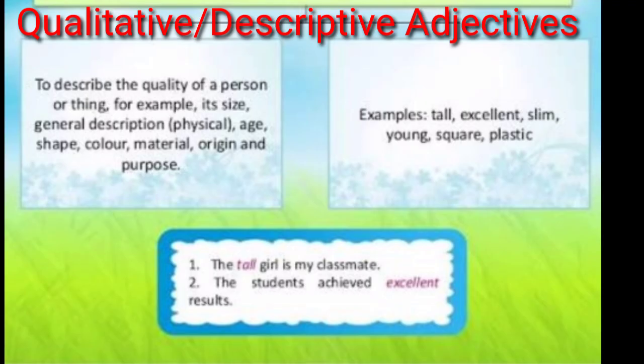The first type of adjective is the qualitative or descriptive adjective. It is used to describe the quality of a person or thing — meaning its size, general physical description, age, shape, color, material, origin, and purpose. For example: tall, excellent, slim, young, square, plastic.